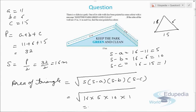So the area = √(16 × 5 × 10) = √800 = 20√2 square meters. This is how we can use the concept of Heron's formula to find the area of a triangle. Thank you once again for watching this video on edupediaworld.com — keep watching further videos and have a nice day!